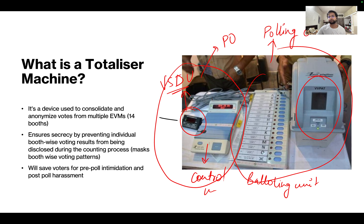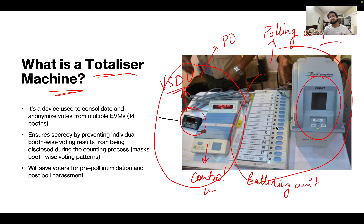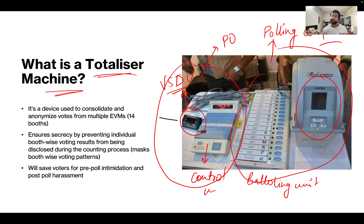Now let us move back to our main topic — what is a totalizer machine? Suppose we have a handful of voters for a particular polling booth, or even just a single voter. What may happen is that after the results, the polling booth results may reveal that this booth voted for a particular party. In that case, there may be chances of pre-poll intimidation or post-poll harassment. The Election Commission of India came up with this novel idea to address that.